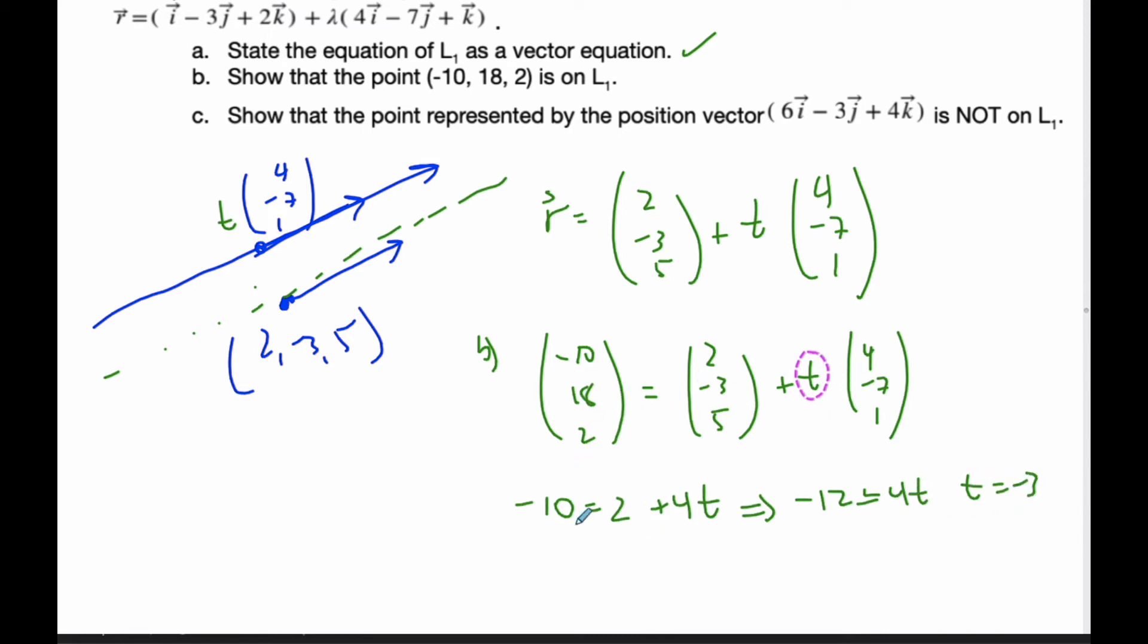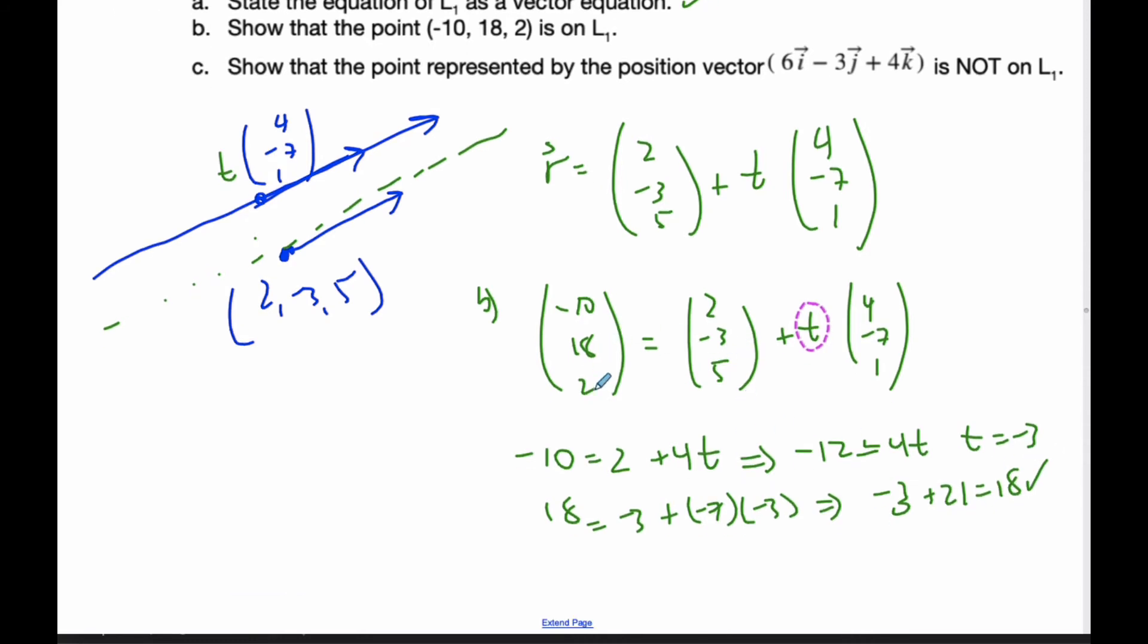Now checking the other components: For y: 18 = -3 + (-7)(-3) = -3 + 21 = 18. That one is good. For z: 2 = 5 + (-3)(1) = 5 - 3, which is indeed 2.